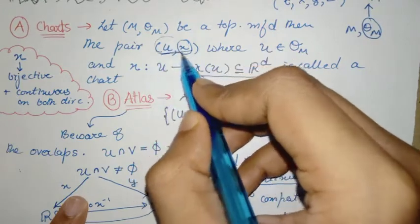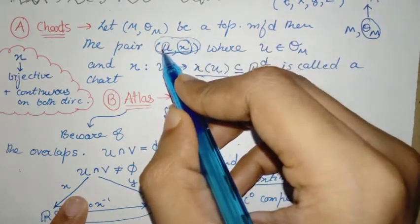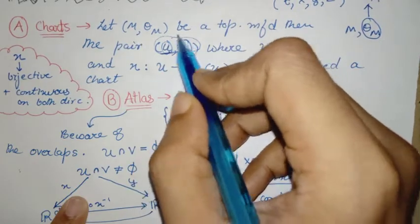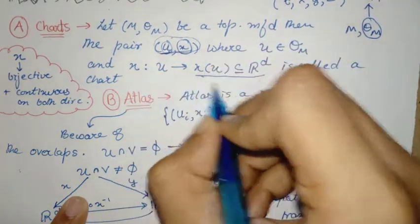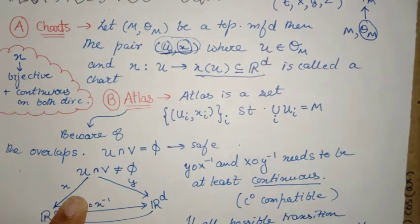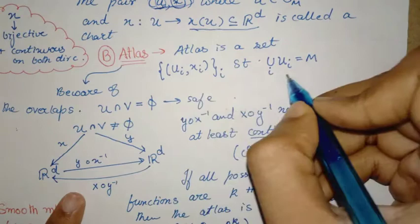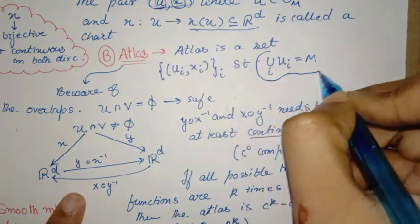These maps are called homeomorphisms - they preserve the openness. So what is a chart? A chart is a pair of an open set of a manifold and a transition function. So this comprises a chart.